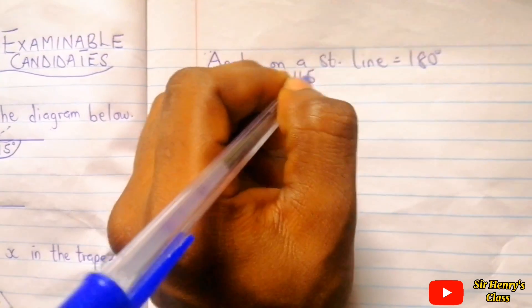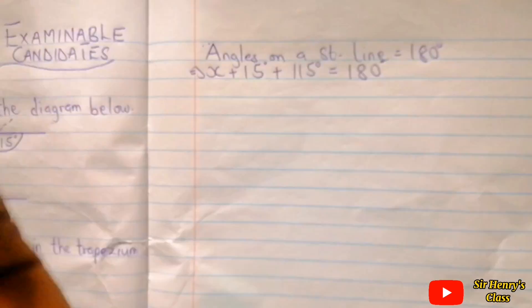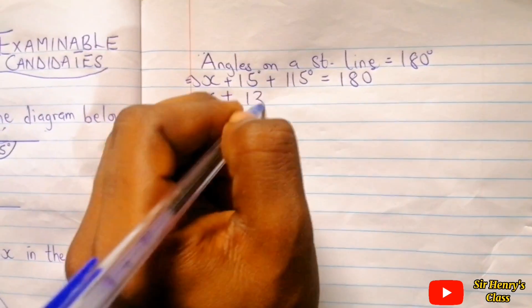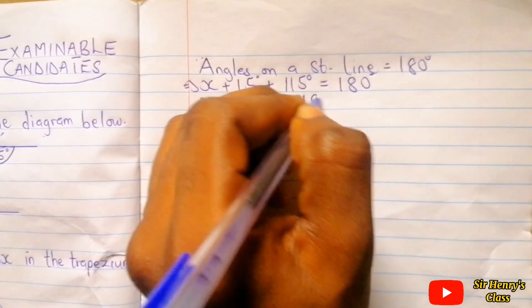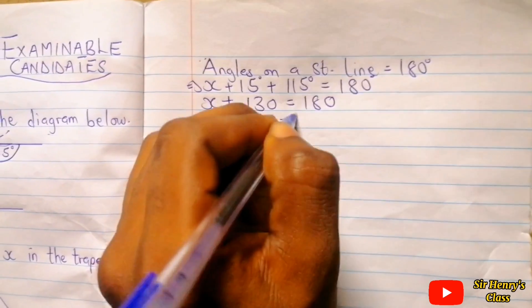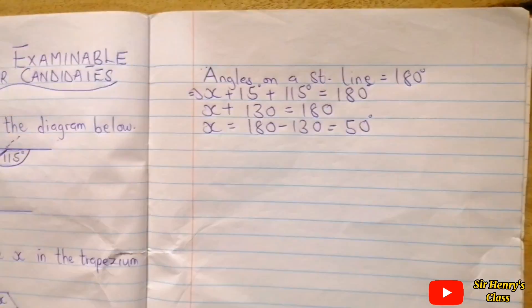So x plus 15 plus 115 is 130 equals 180. Since we want to find x, we make x the subject and that will give us 50 degrees. So x equals 50 degrees.